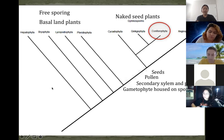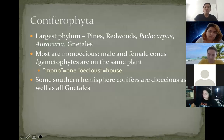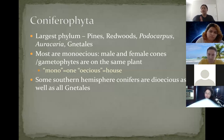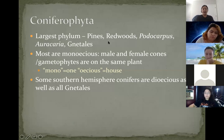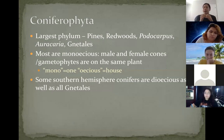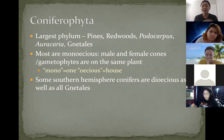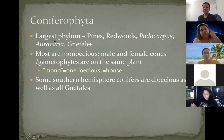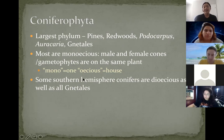The last phylum is the Coniferophyta, which is the largest phylum within the gymnosperms. It includes familiar plants like pines and redwoods, but also Podocarpus and Araucaria — southern hemisphere conifers — and the Gnetales. Unlike cycads and ginkgos, conifers are monoecious — they have male and female cones on the same plant. For many pine species, male cones are usually at the bottom closer to the base while female cones are higher up, which typically prevents self-fertilization. Some conifers like Podocarpus, Araucaria, and the Gnetales are dioecious, but for the most part Coniferophyta are monoecious.